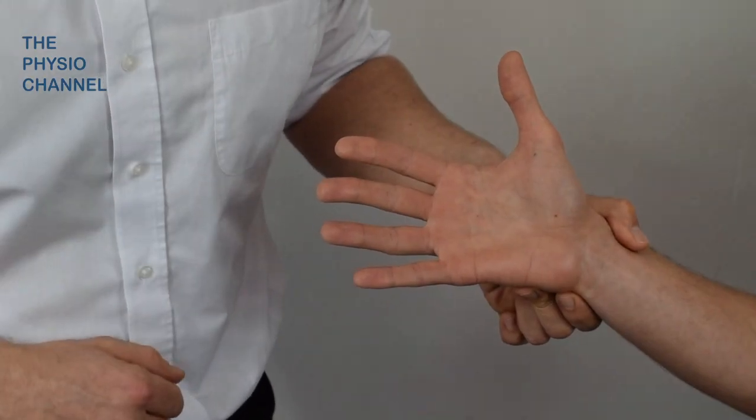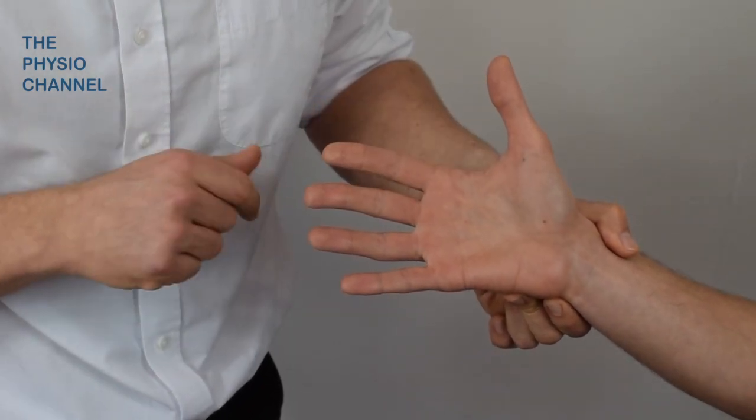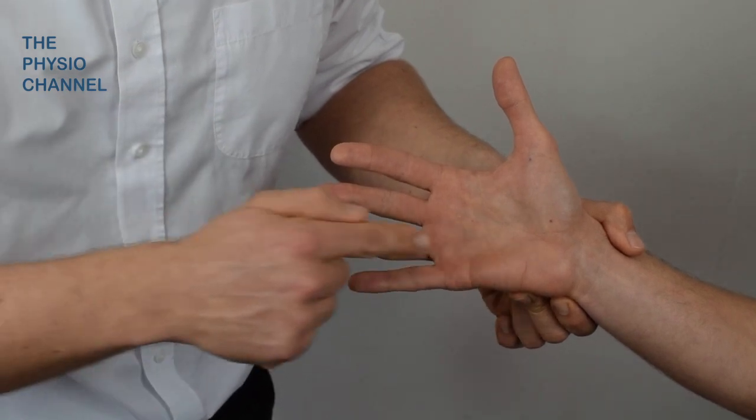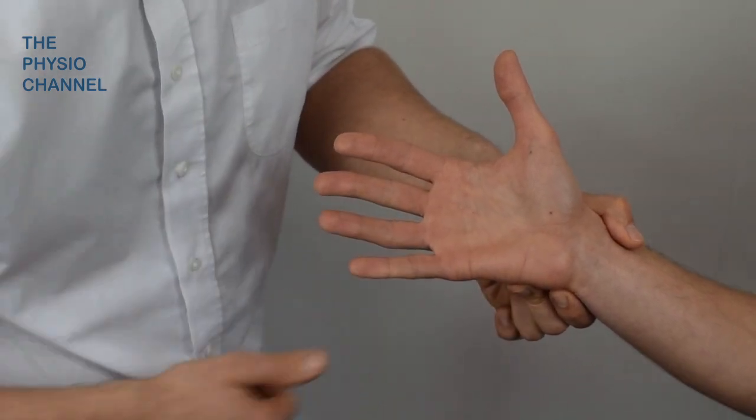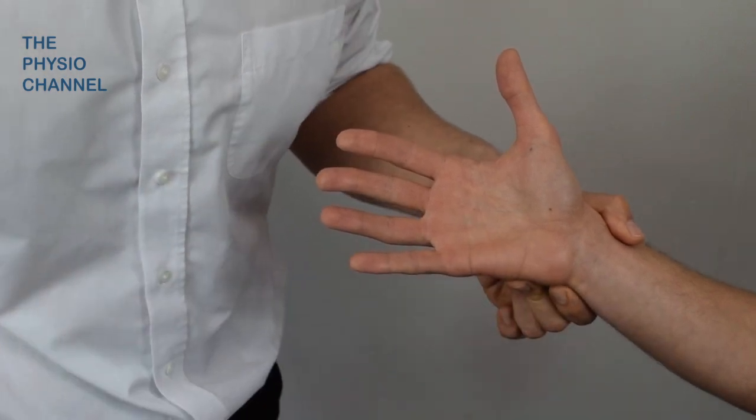Firstly, numbness in the median nerve distribution of the hand. The cutaneous supply of the median nerve includes the thumb, the index finger, the middle finger and half of the ring finger, with the other half of the ring finger and the little finger being served by the ulnar nerve on the ulnar side of the hand.